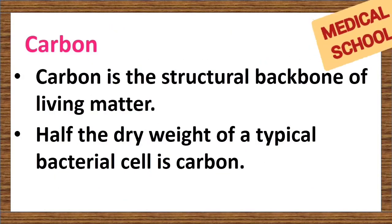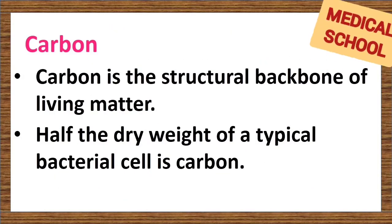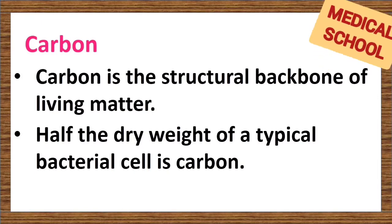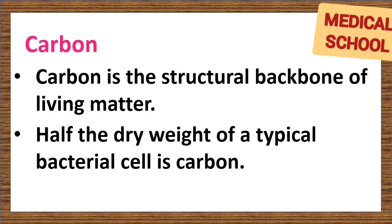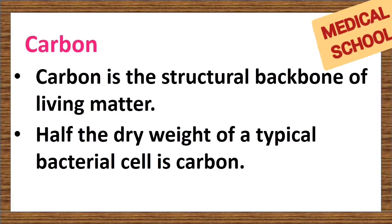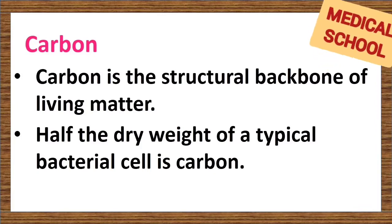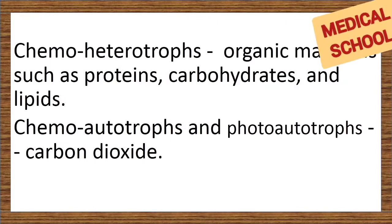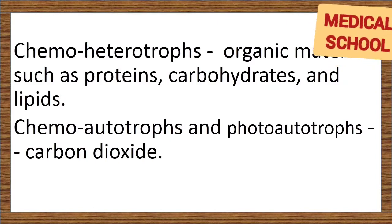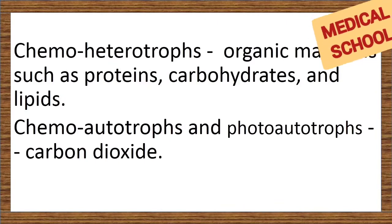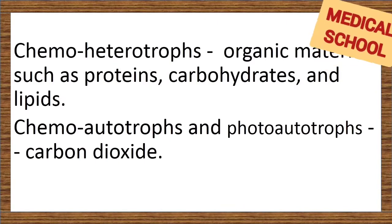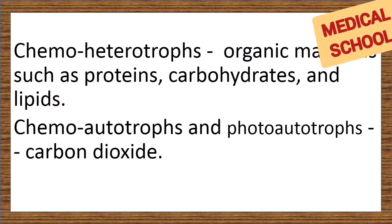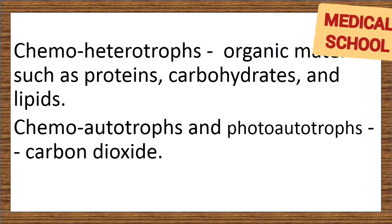Carbon. Besides water, one of the most important requirements for microbial growth is carbon. Carbon is the structural backbone of living matter — half the dry weight of a typical bacterial cell is carbon. Chemoheterotrophs get most of their carbon from organic materials such as proteins, carbohydrates, and lipids. Chemoautotrophs and photoautotrophs derive their carbon from carbon dioxide.